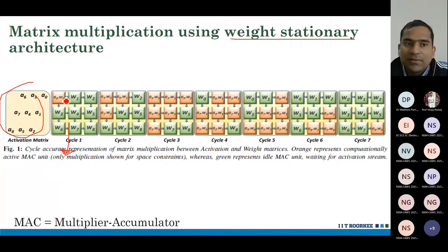In the first cycle, A0 gets multiplied with W0 in cycle 1. Then, A0 moves here. Then, A0 moves here. Finally, A0 has completed its computation.